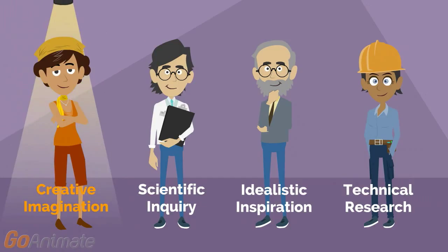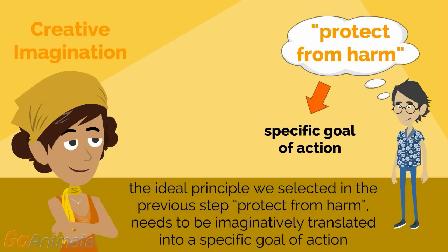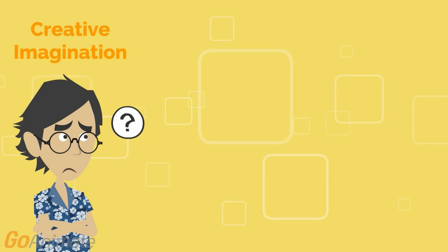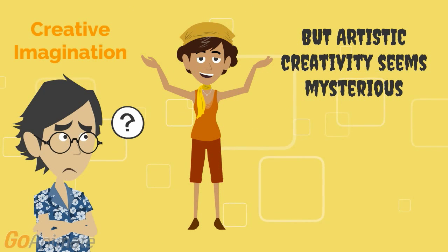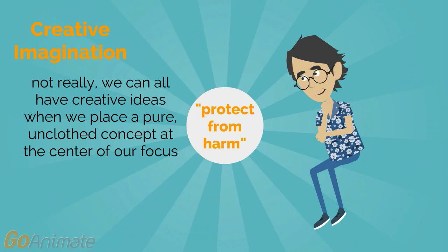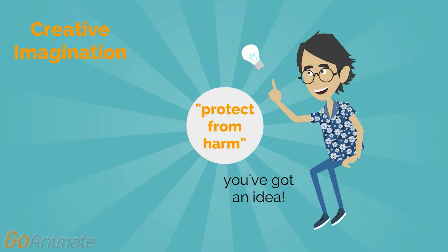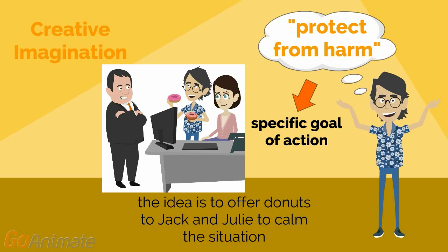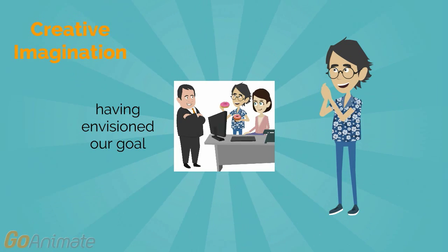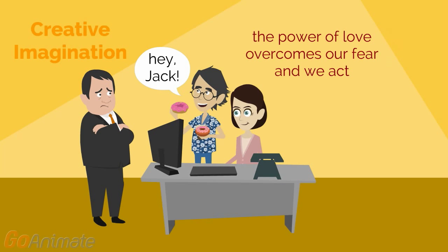Skill 3 is creative imagination. A decision is better if we envision a clear goal. The ideal principle we selected in the previous step — protect from harm — needs to be imaginatively translated into a specific goal of action. We call this moral imagination. Artistic creativity seems mysterious, but we can all have creative ideas when we place a pure, unclothed concept at the center of our focus. This sparks creativity to add detail. The idea is to offer donuts to Jack and Julie to calm the situation. Having envisioned our goal, we are driven by love — our love for the objective to protect Julie from harm. The power of love overcomes our fear, and we act.